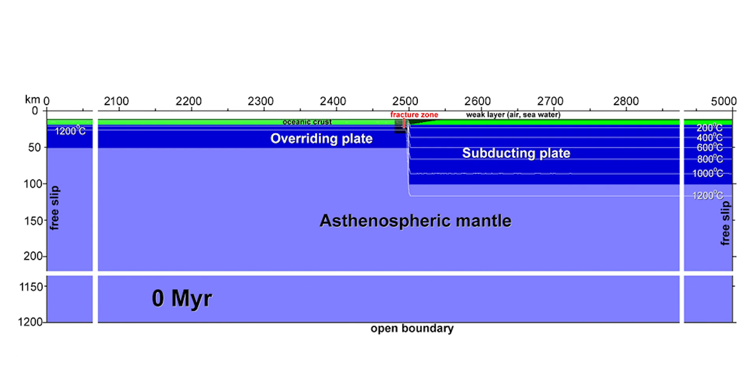Thin, young lithosphere is found to the left of the fracture zone. Because this lithosphere has a thin mantle root, shown here in dark blue, it is buoyant compared to the underlying asthenosphere, shown in purple.